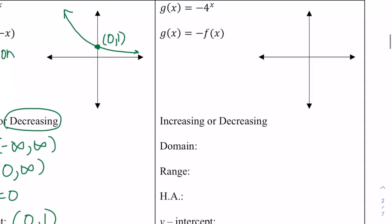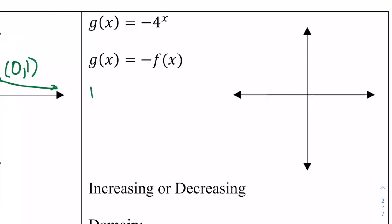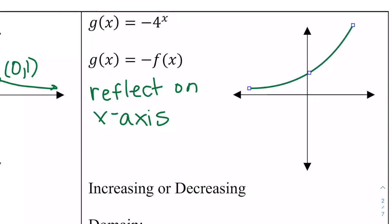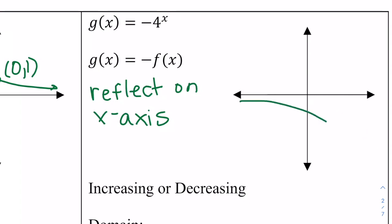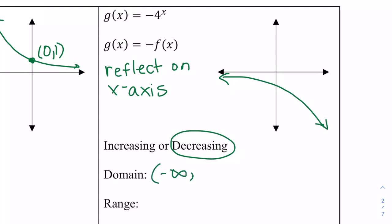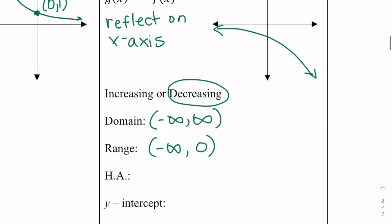Now let's look at the transformation negative 4 to the x. This will be a reflection on the x-axis. The parent function originally went up; now it reflects and goes down. It will be decreasing. The domain is still negative infinity to infinity, but the range is going to change since it approaches negative infinity as x approaches infinity. The horizontal asymptote is still the x-axis. The y-intercept will be (0, negative 1), and there are still no x-intercepts.